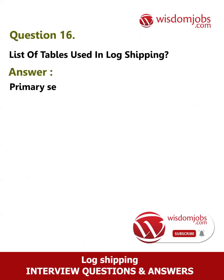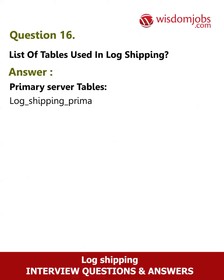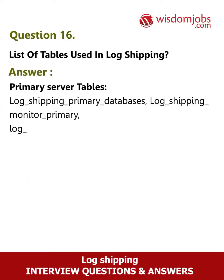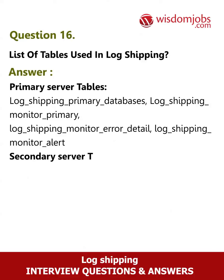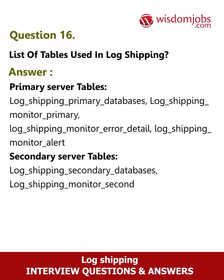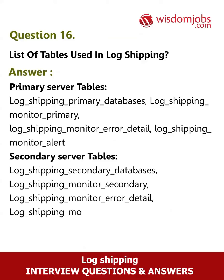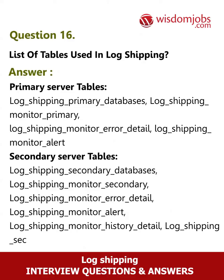Question 16: What are the tables used in log shipping? Answer: Primary server tables include: log_shipping_primary_databases, log_shipping_monitor_primary, log_shipping_monitor_error_detail, log_shipping_monitor_alert, log_shipping_monitor_history_detail, and log_shipping_secondary.